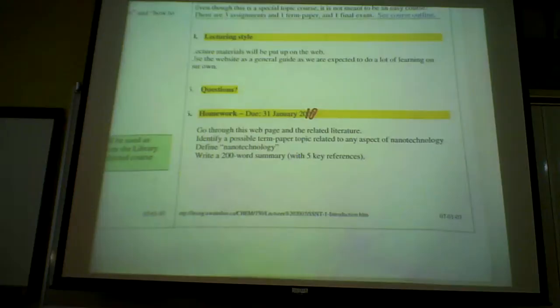The 200 word summary is about the term paper topic, not the word nanotechnology. It's a little bit confusing the way I write it. I want something related to nanotechnology and a brief abstract of what you're going to write about that topic in nanotechnology.